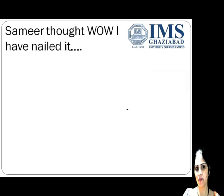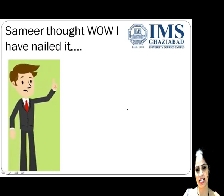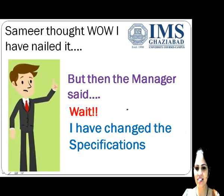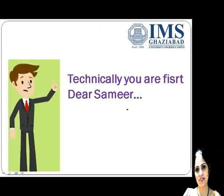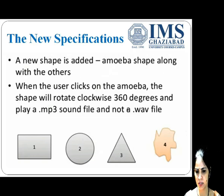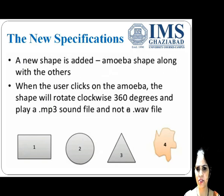Samir thought he had nailed it and had completed the work in much less time compared to Tanya. But suddenly the manager said the specifications had changed. A new shape is added — Amoeba. Amoeba is a distorted shape that doesn't have any particular angle or side. When the user clicks on the amoeba, the shape will rotate 360 degrees, and rather than a .wav file for shape numbers one, two, and three, it should play a .mp3 file.